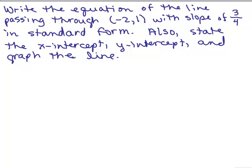Here's an example. Write the equation of the line passing through negative 2, 1 with slope of 3-fourths in standard form. Also state the x-intercept, y-intercept, and graph the line.